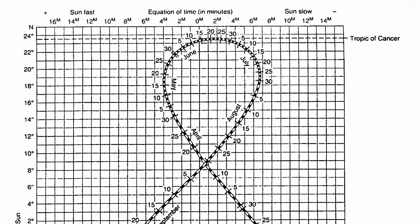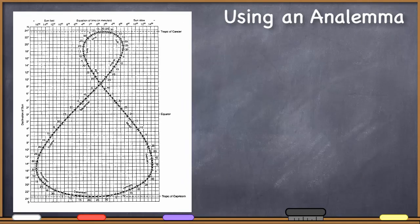Along the top of the analemma you have the equation of time. The equation of time occurs because the earth is traveling at different speeds around the sun due to its elliptical orbit — if it were a perfectly circular orbit we wouldn't have an equation of time. You can also calculate the equation of time with the analemma, but for our purposes here all we need is to determine the declination of the sun on any particular day.